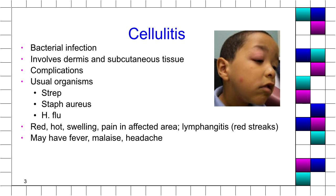We will begin with cellulitis, which is a bacterial invasion that affects the skin and the dermis. It can also penetrate through the subcutaneous tissue. There can be complications based on where it is. When you look at this boy in the picture you can see that he has two obvious lesions — one on the cheek, and most likely that lesion spread to the eyelid.